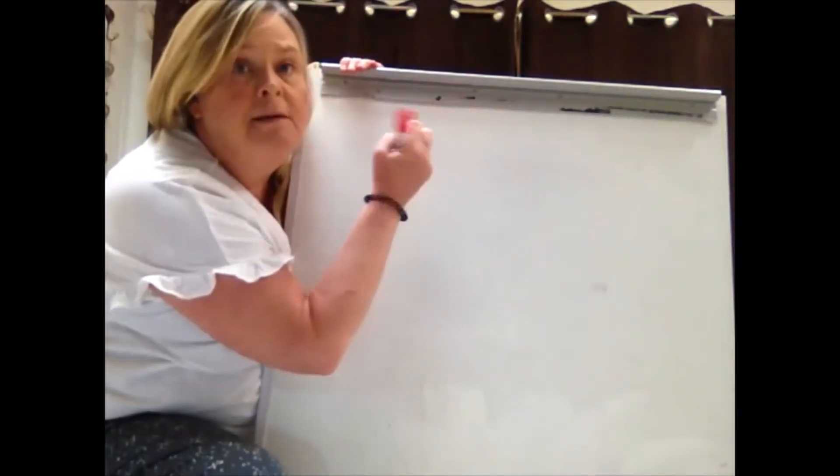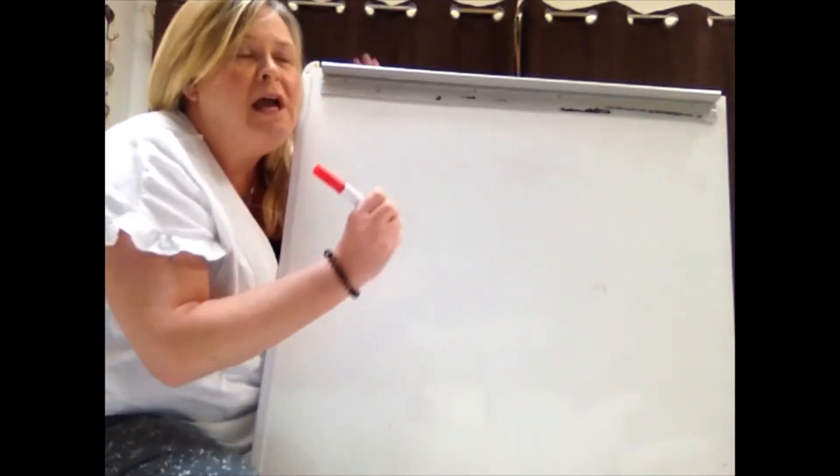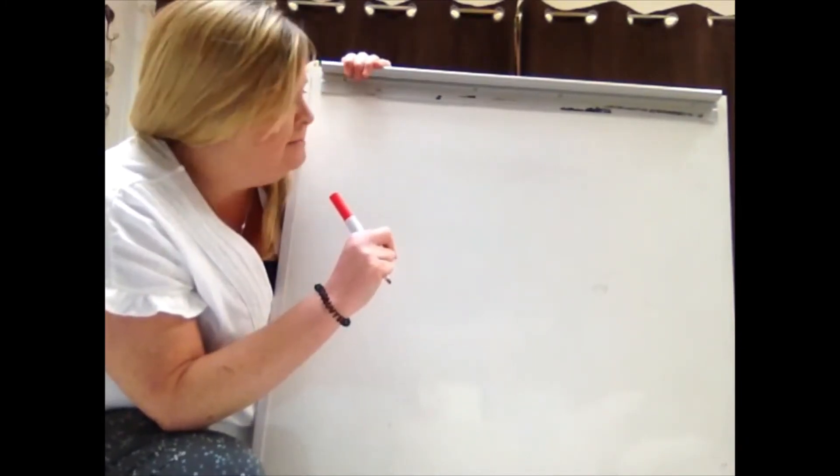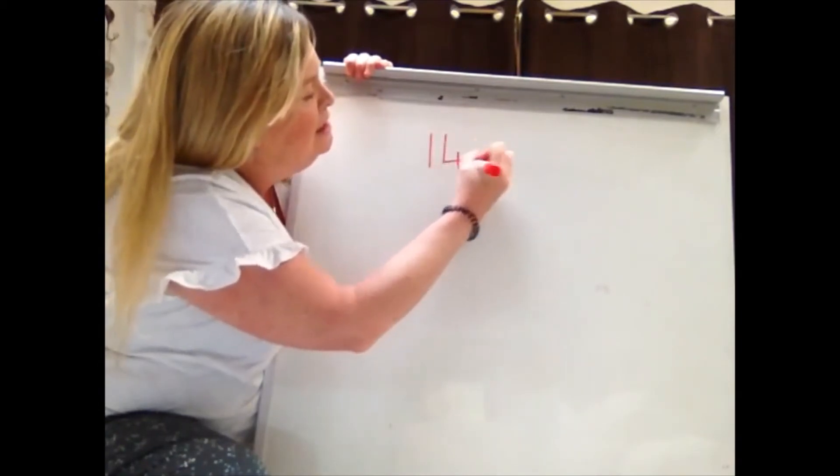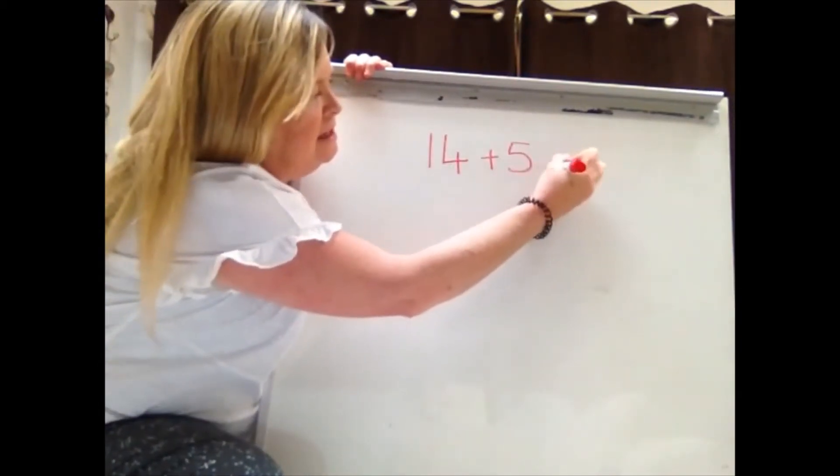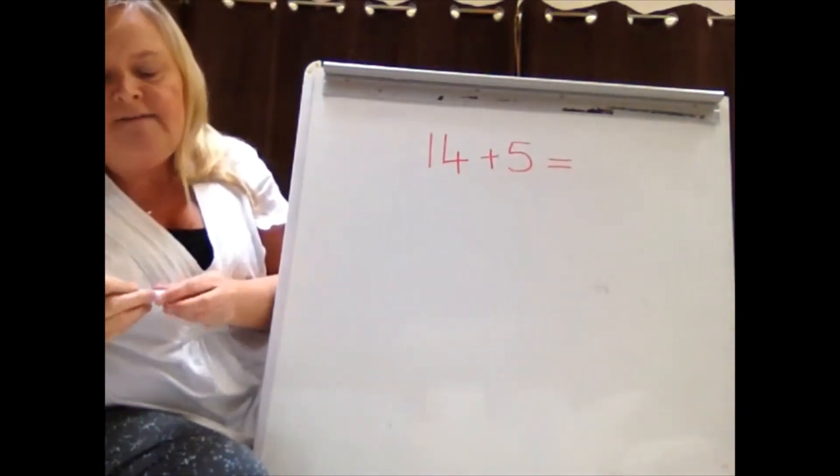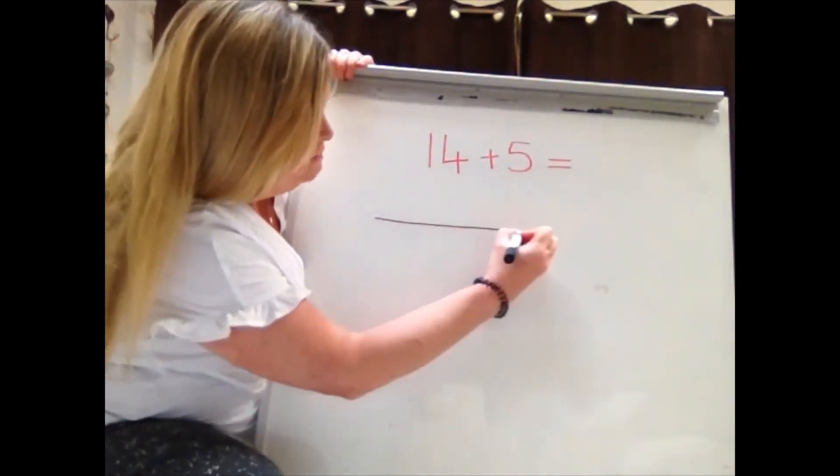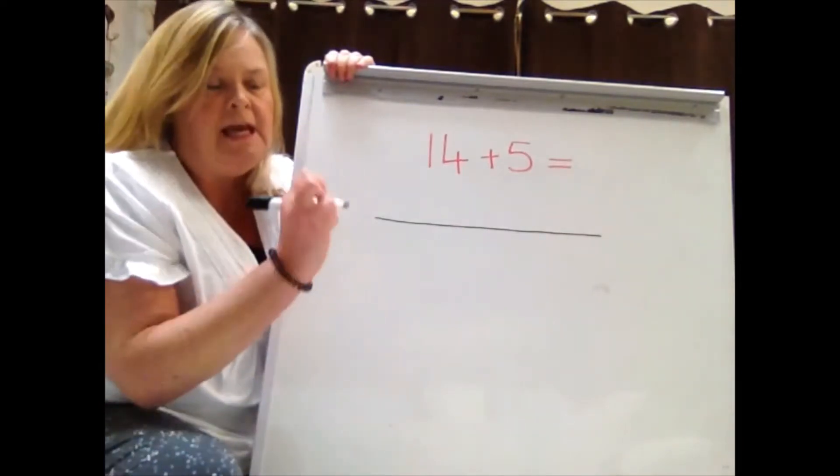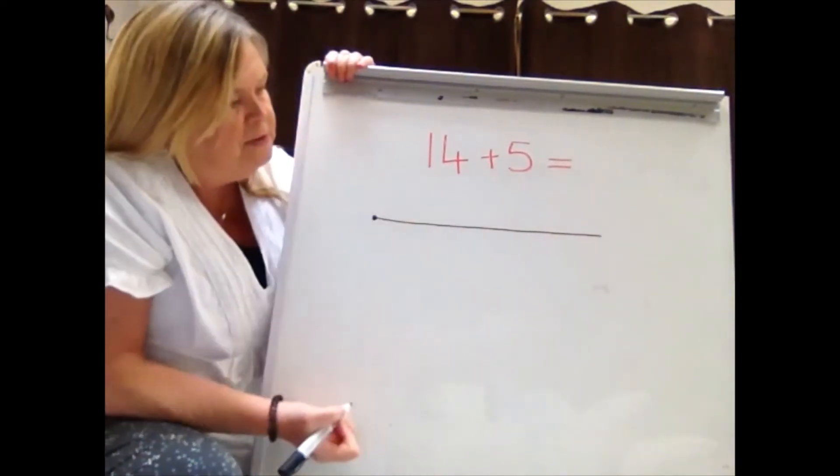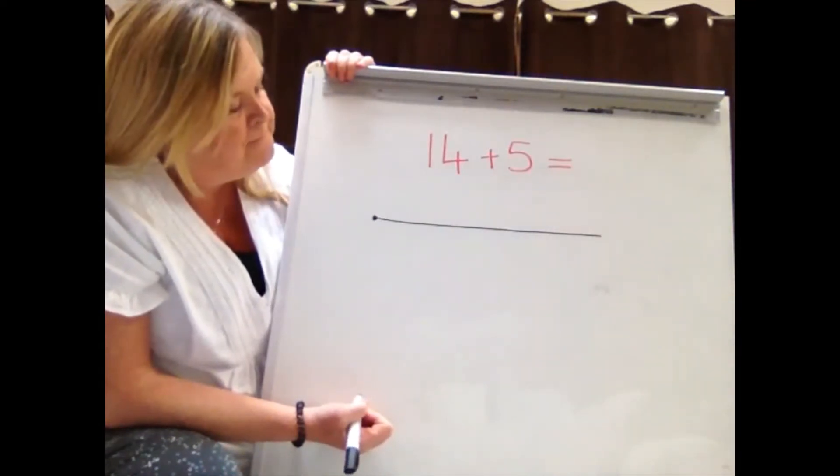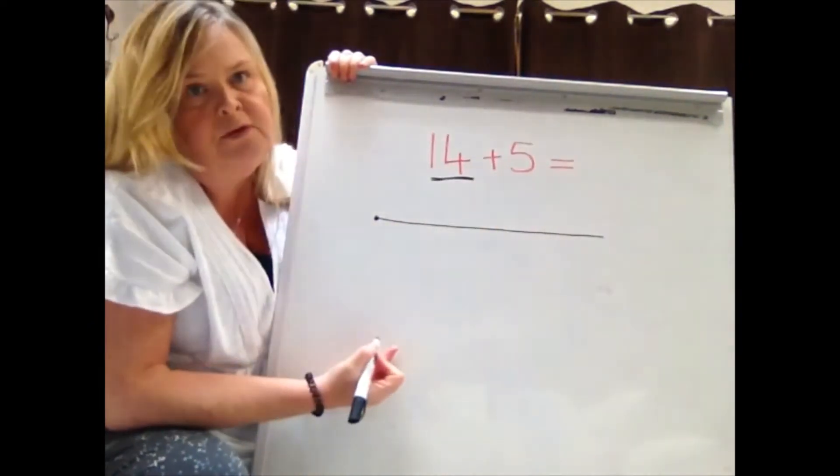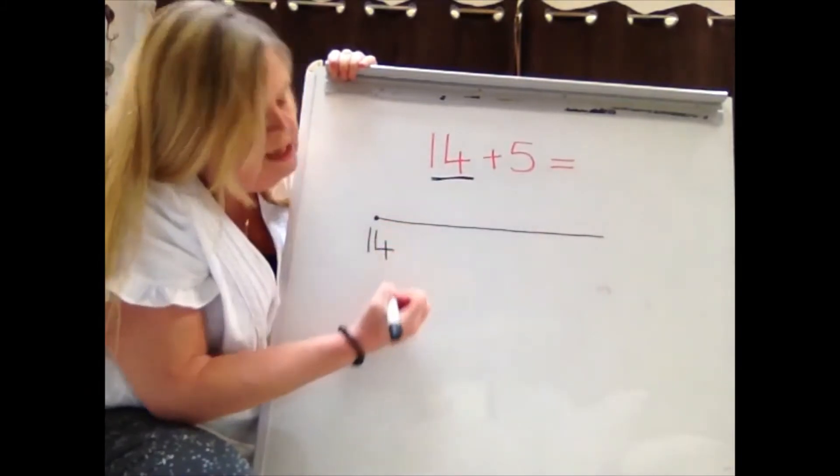So we need to have a number sentence. I'm going to start with small numbers so we can work out how to do the empty number lines, not necessarily using it for those big numbers just yet. So we'll start with the number sentence 14 add 5 equals. And then the first thing you need to do for an empty number line is draw a line. Second thing, put a dot at the beginning. When we normally use a number line, we would start counting from the number 14, so I'm going to put 14 at the beginning of the number line.